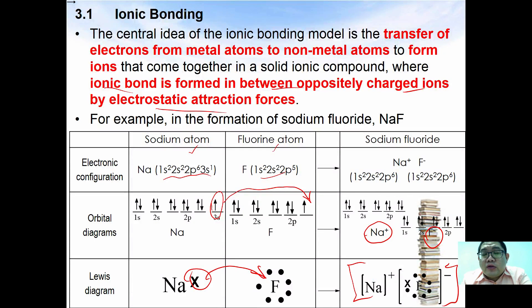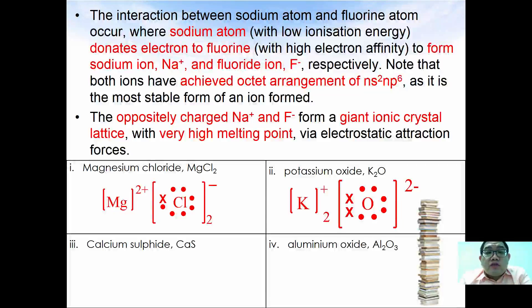The interaction between sodium atom and fluoride atoms occur when sodium atom with low ionization energies donates electron to fluorine with high electron affinity to form sodium ion and fluoride ion respectively. Note that both ions have achieved octet arrangement of ns² np⁶ as it is the most stable form of an ion.